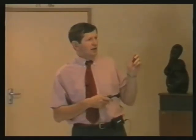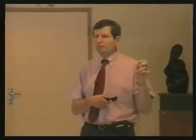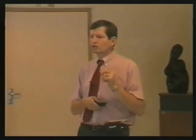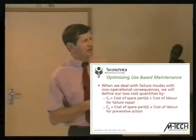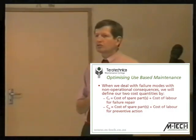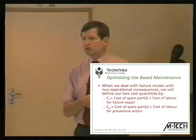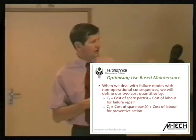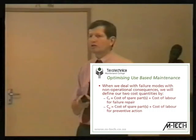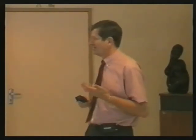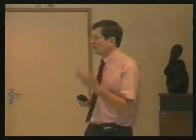These quantities are defined for situations where production loss does have an impact. We also find situations where it does not — that is, where the failure does not have production consequences. In that case, the cost of production loss falls away in both formulas, and the cost of failure and the cost of prevention then just become the cost of spare parts plus the cost of labor involved. But mostly, for the failure modes where we need to set maintenance strategy, the loss of production is also involved.